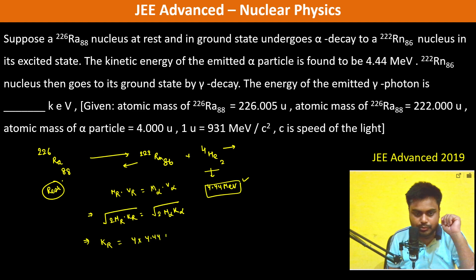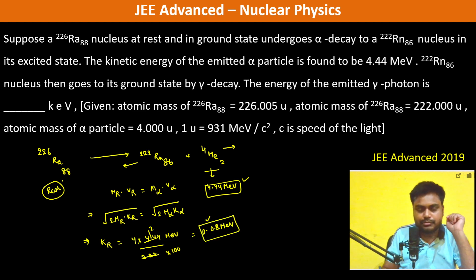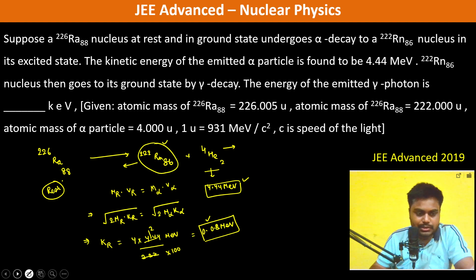And 200 cancels, 2 cancels, so this is 0.08 mega electron volt. So this is the kinetic energy of Rn. Now also we will have the mass defect. So what is the mass defect?